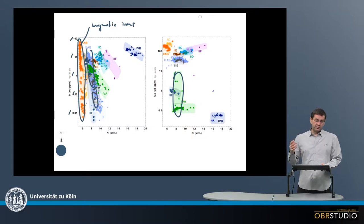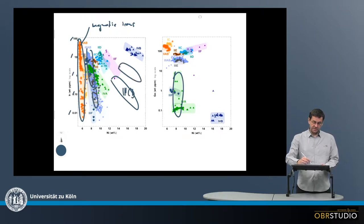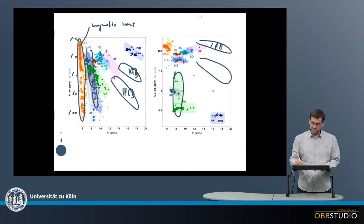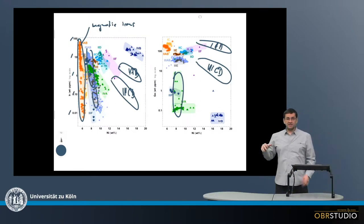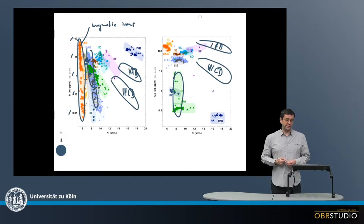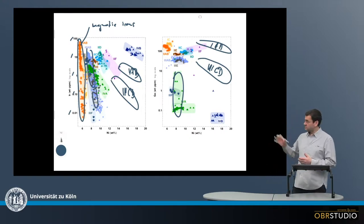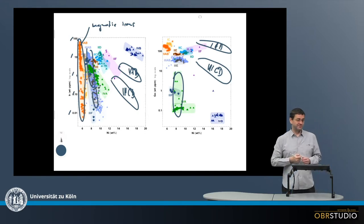Earlier there were also two other groups included here. One were the 3CD irons, and others were the 1AB irons that would plot somewhere here in this plot. Nowadays these two groups are classified into the primitive achondrites, not into the achondrites, and therefore they are not necessarily displayed here in this plot, but it's helpful to see where these fall.